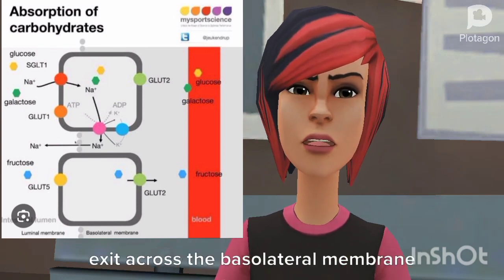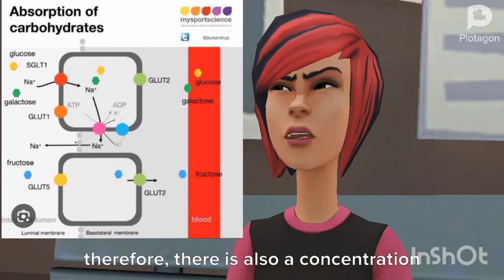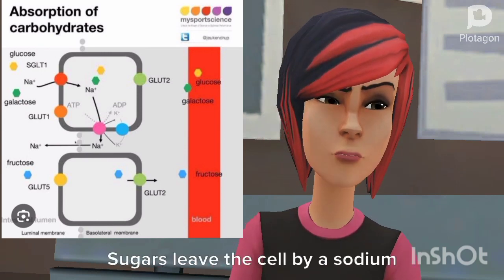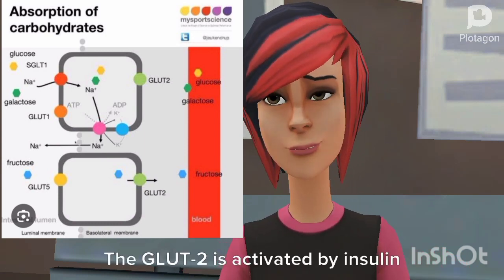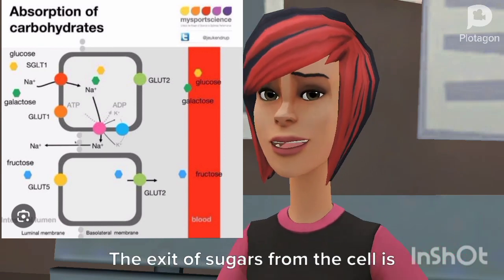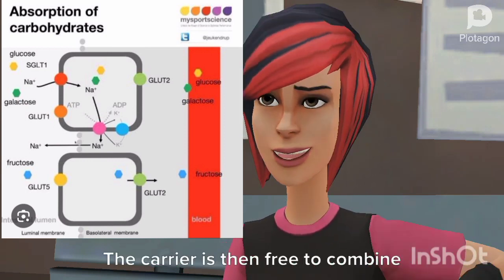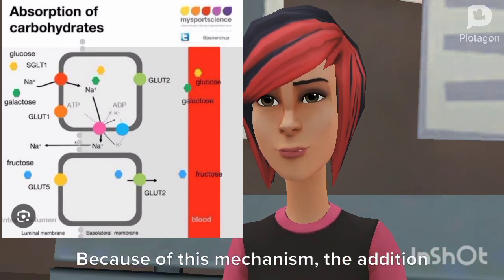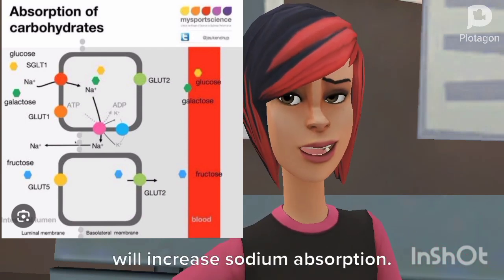Glucose and galactose within the cell exit across the basolateral membrane and are carried away by the circulation. Therefore, there is also a concentration gradient favoring the removal of the sugars from the carrier. Sugars leave the cell by a sodium ion-independent facilitated diffusion process, GLUT2. The GLUT2 is activated by insulin from the pancreas. The exit of sugars from the cell is rapid, with little intracellular accumulation. The carrier is then free to combine with more sodium ion and glucose or galactose in the luminal compartment. Because of this mechanism, the addition of glucose or galactose to the lumen will increase sodium absorption.